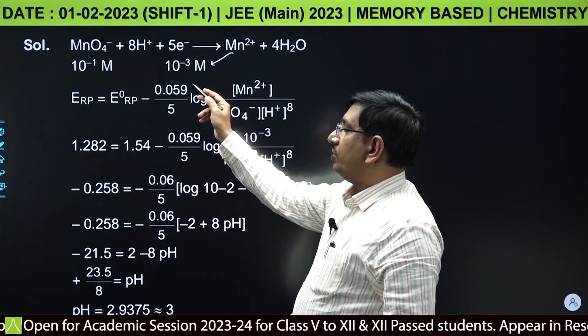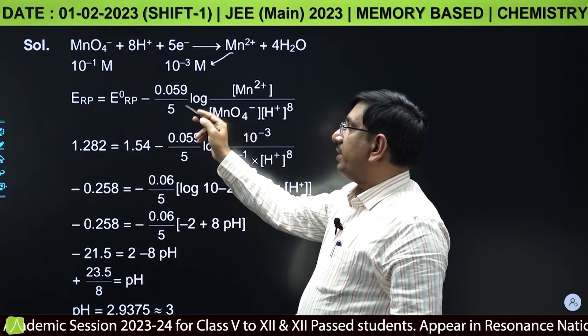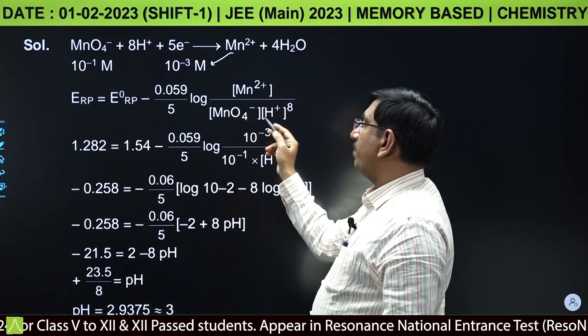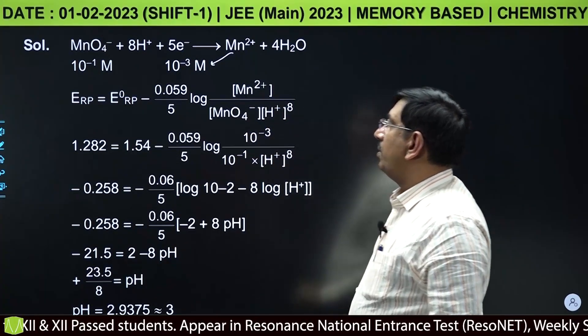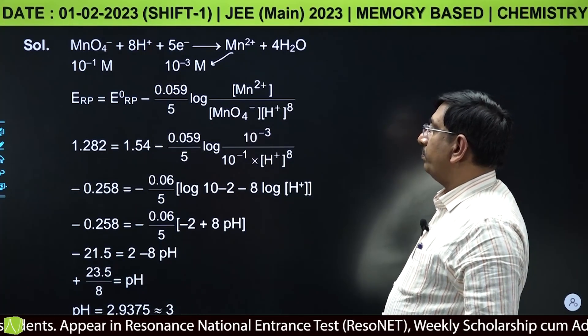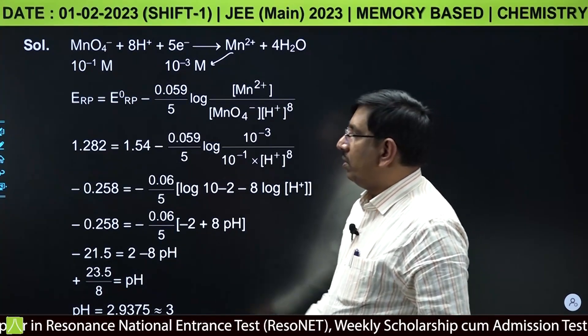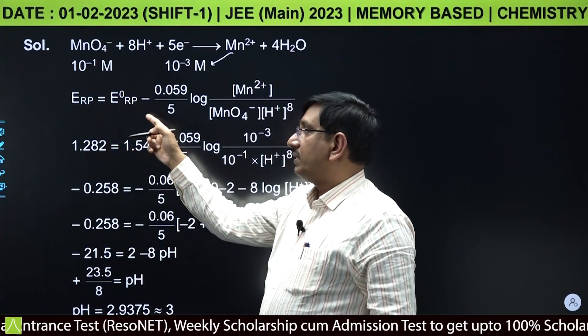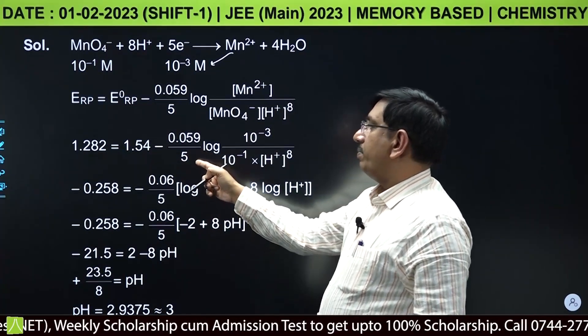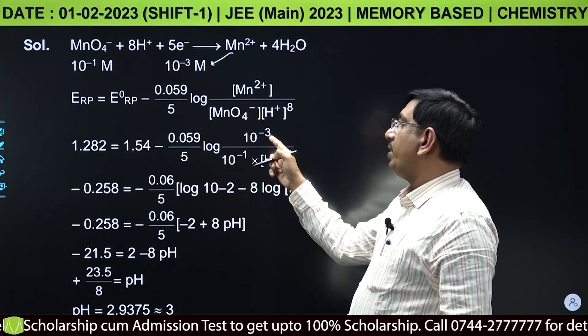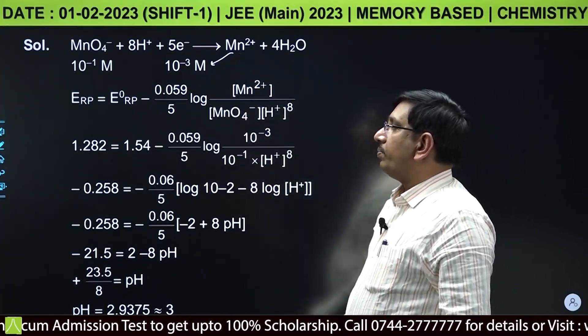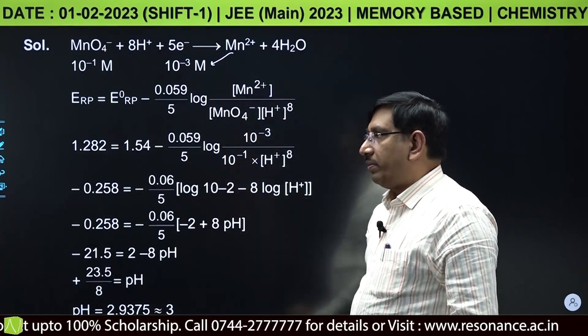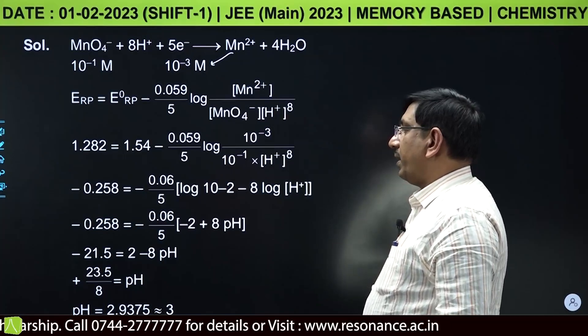From Nernst equation: E = E° - 0.059/n × log([Mn2+]/[MnO4-][H+]8). Putting values: reduction potential given, standard potential given, number of electrons is 5, Mn2+ concentration 10-3 molar, MnO4- concentration 10-1 molar, and H+ concentration to power 8.